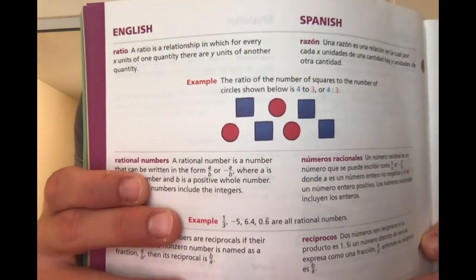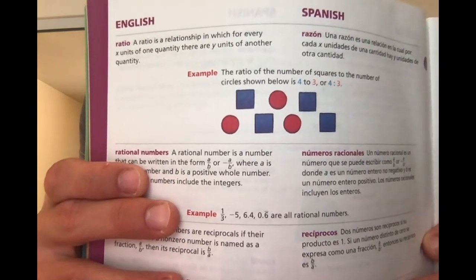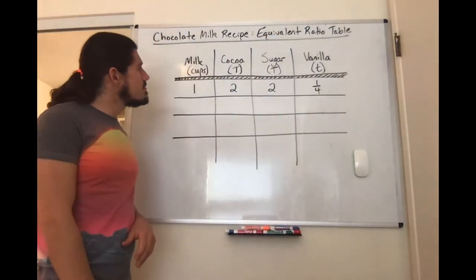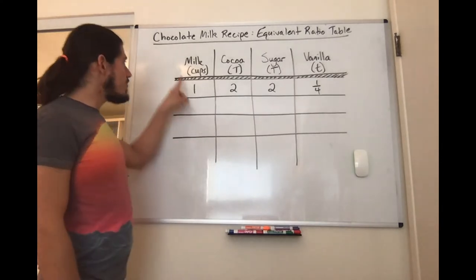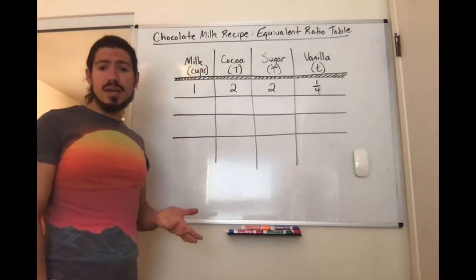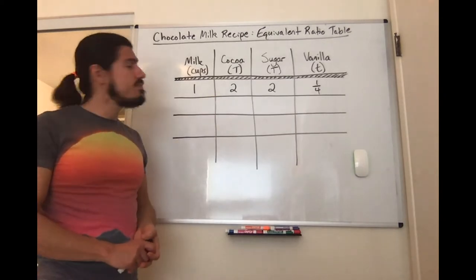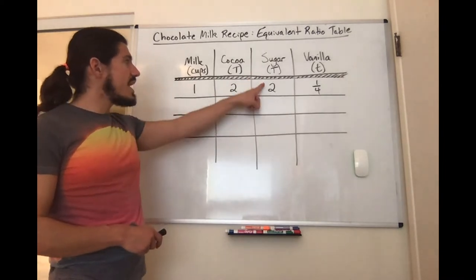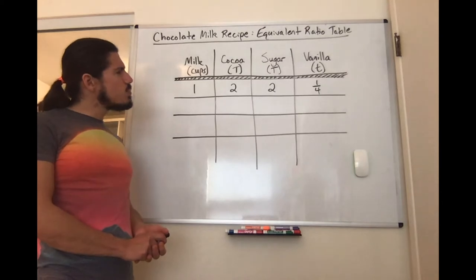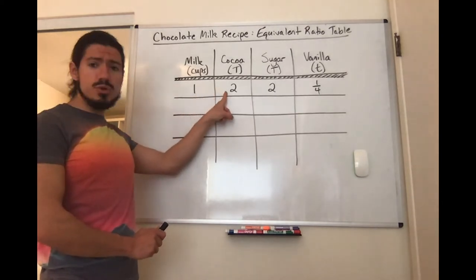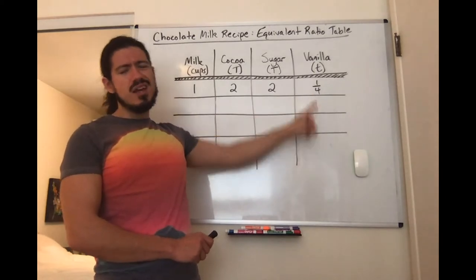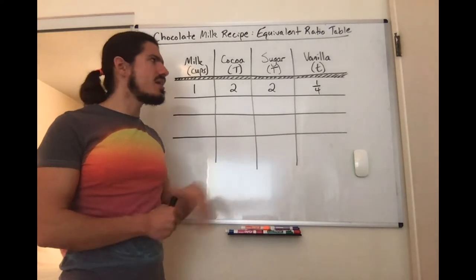You can see there are four squares for every three circles, so you could say the ratio of squares to circles is four to three. For example, you could say the ratio of cups of milk to tablespoons of cocoa is one to two, or for every cup of milk there are two tablespoons of cocoa. Some people also use the word 'per' — like two tablespoons of sugar per cup of milk. The ratio in this recipe is one cup of milk to two tablespoons of cocoa to two tablespoons of sugar to one-fourth teaspoon of vanilla. There's also a dash of salt, but that's such a small amount I'm not going to include it on the table.